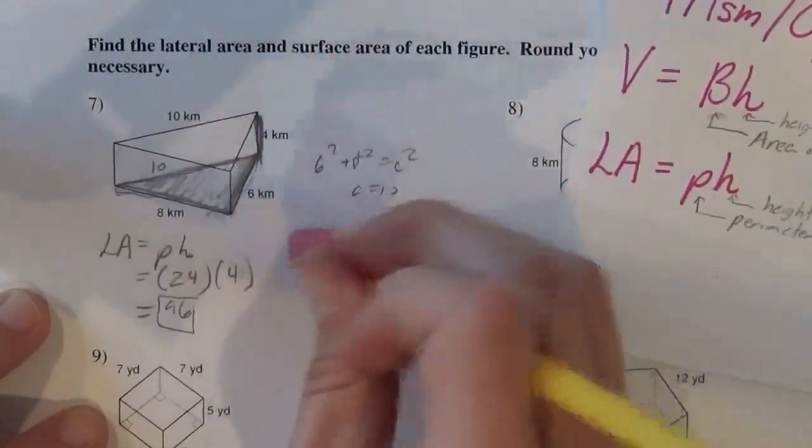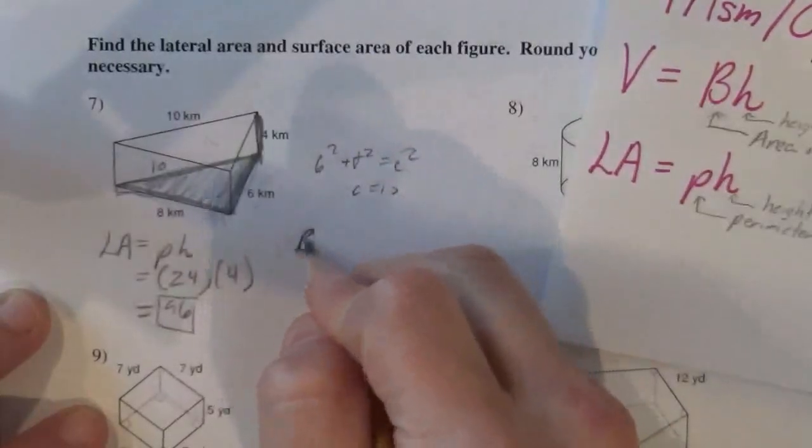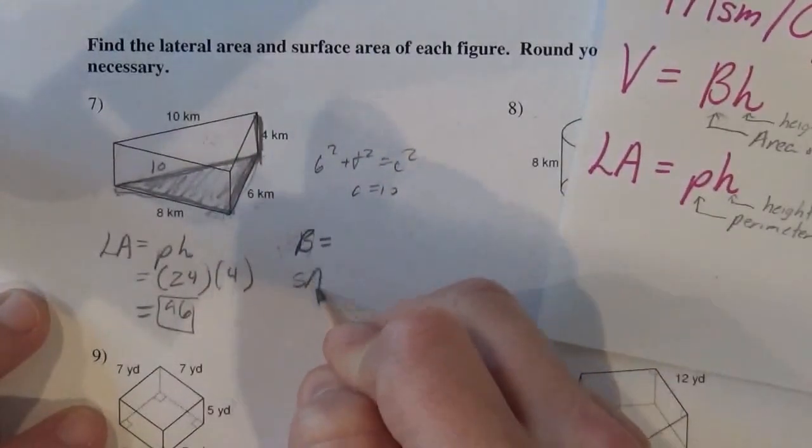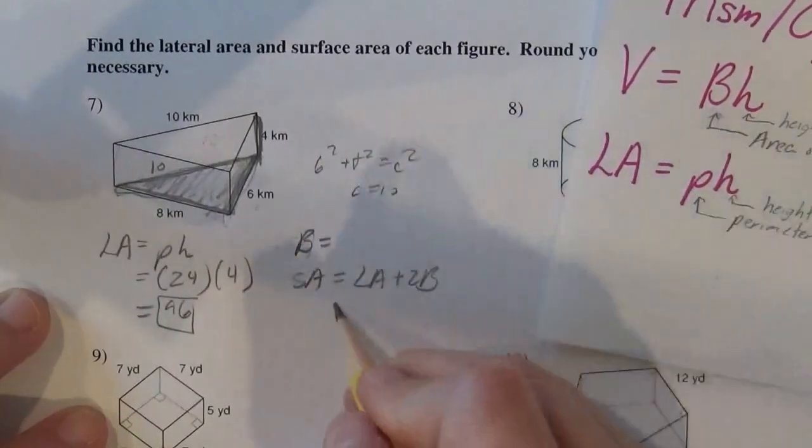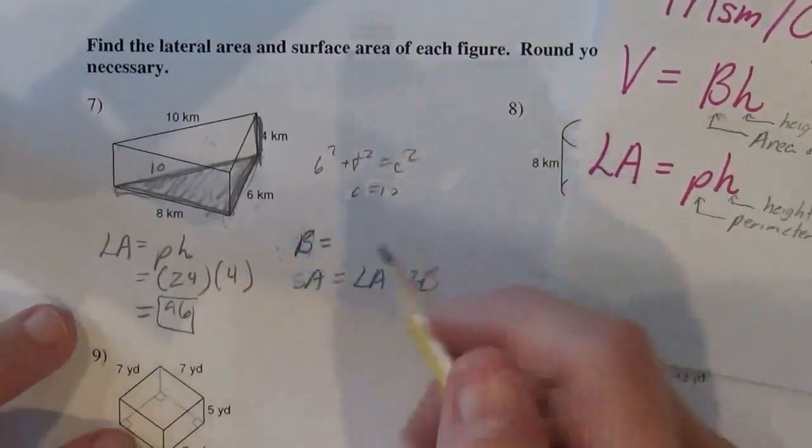So if I just find the area of the base, my surface area is the lateral area and then tack on two bases. I write it like a formula but don't memorize it like a formula.